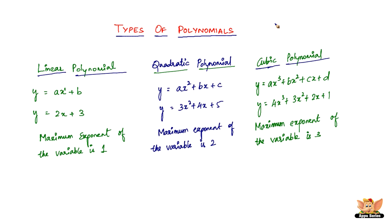For the forthcoming videos, this understanding of the types of polynomials should suffice. The most important thing is knowing how to identify them based on the degree of the equation — the maximum exponent. In the forthcoming videos we will see what kind of graph each type gives us. When you substitute a value for x you get a value for y, and x comma y makes a point, so we'll look at what kind of graph each type of polynomial produces.